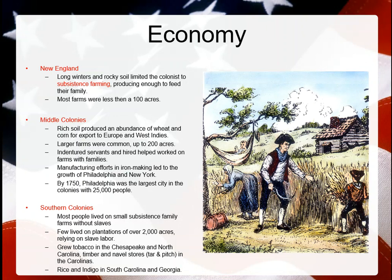In the southern colonies, most people lived on small subsistence family farms without slaves. Of course, a few lived on plantations of over 2,000 acres and relied heavily on slave labor. Tobacco was grown in the Chesapeake and Northern Carolina. Timber and naval stores like tar and pitch were common in the Carolinas. Rice and indigo were grown in South Carolina and Georgia. Every region of the 13 colonies has its pros and cons, and it's important to understand those for AP. Go ahead and write that summary, and we'll discuss it when we come back.